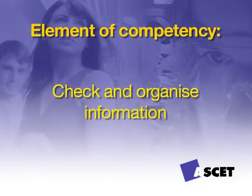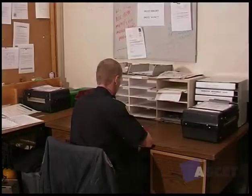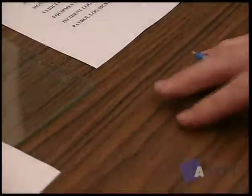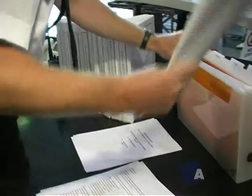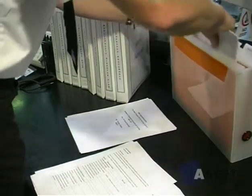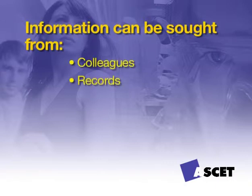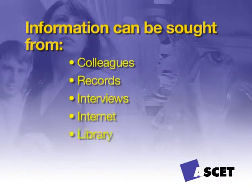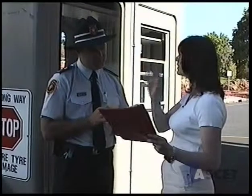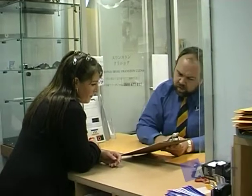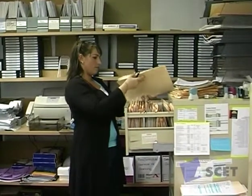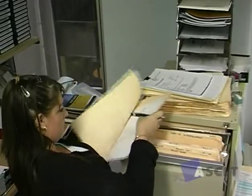Check and organise information. All information that has been gathered must be assessed in terms of validity, reliability and relevance against all organisational and reporting requirements. If any additional information is required, it can be sought from sources such as colleagues, records, interview, internet, library or other organisations where appropriate to your task or assignment. Make sure you review all material to ensure its completeness and that it accurately meets all reporting requirements. All of this information must be prioritised in a logical manner to facilitate any further use, and must be done within organisational procedures and reporting requirements.